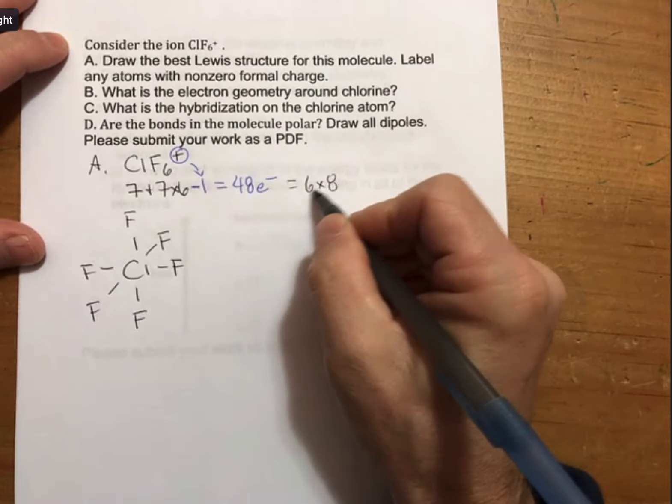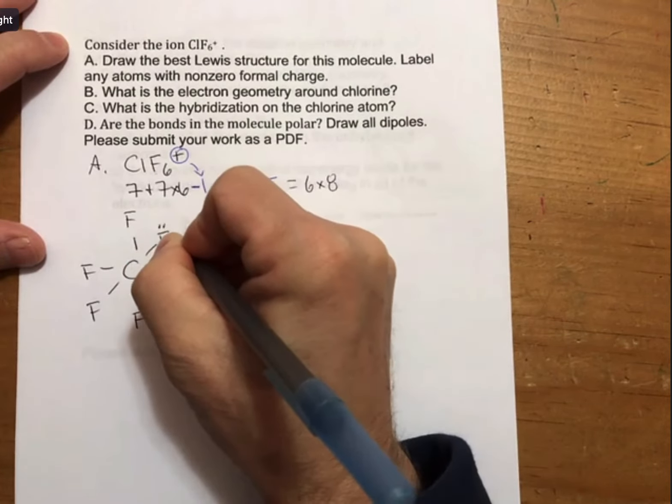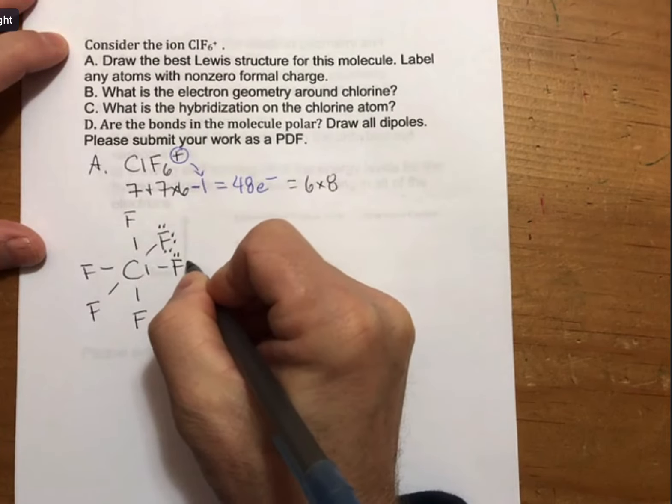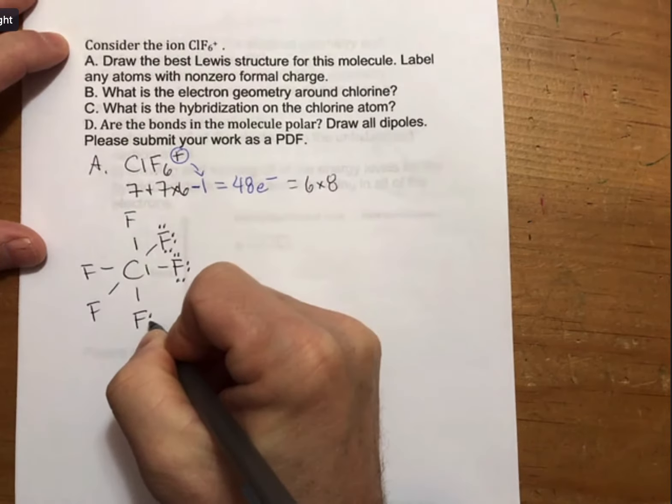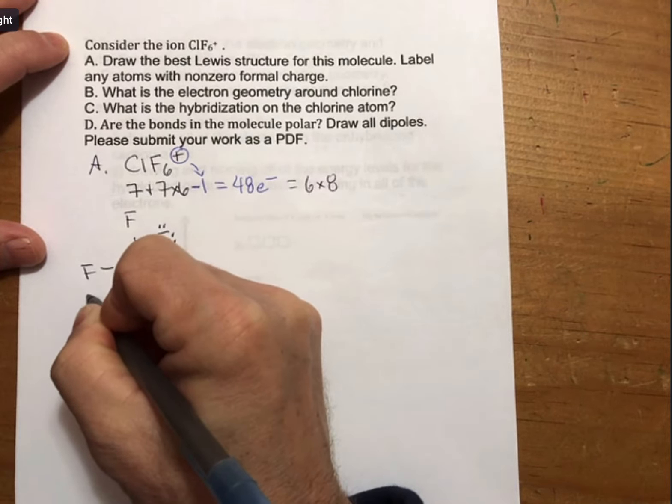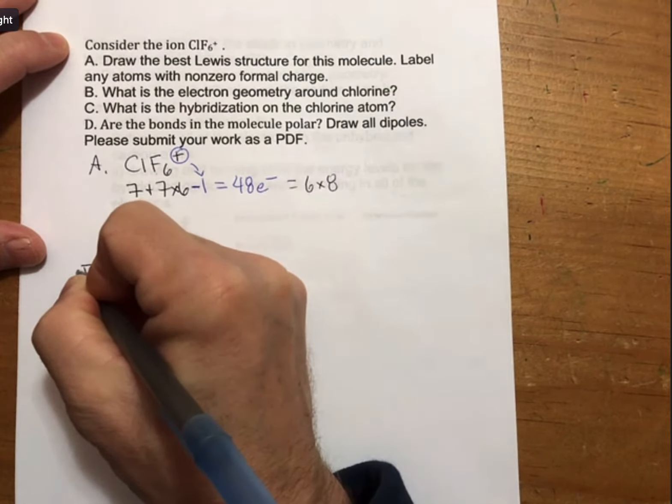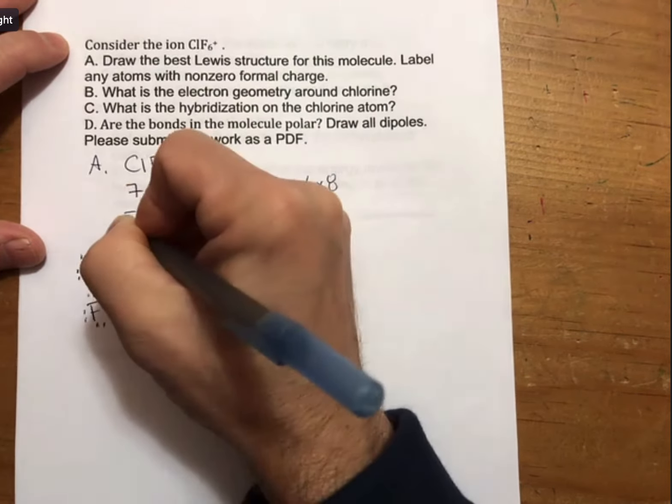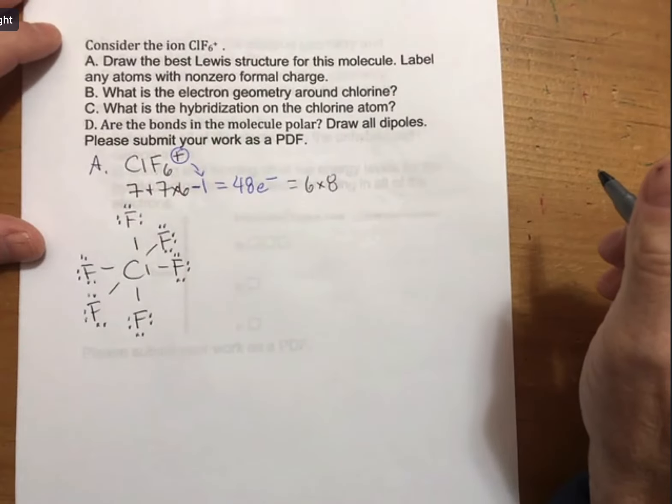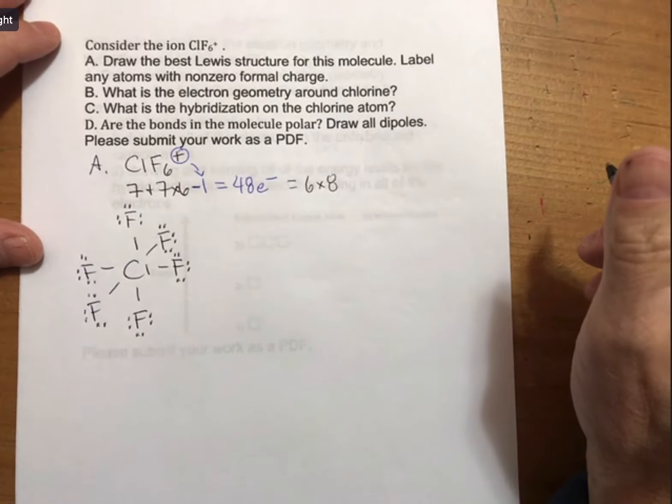What that means is that if you put 8 electrons around each of these fluorines, you will end up with all of the pairs of electrons. And there will be no extra pair for the central chlorine.